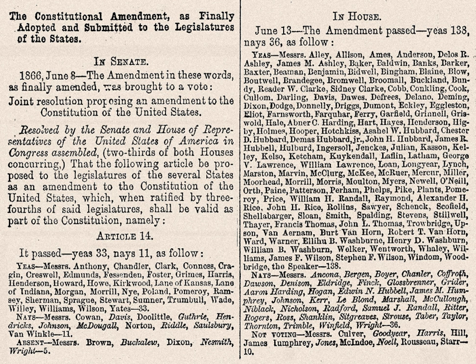Consideration then turned to a proposed amendment by Representative John A. Bingham of Ohio, which would enable Congress to safeguard 'equal protection of life, liberty, and property' of all citizens; this proposal failed to pass the House. In April 1866, the Joint Committee forwarded a third proposal to Congress, a carefully negotiated compromise that combined elements of the first and second proposals, as well as addressing the issues of Confederate debt and voting by ex-Confederates. The House of Representatives passed House Resolution 127, 39th Congress, several weeks later and sent it to the Senate. Amendments to Sections 2, 3, and 4 were adopted on June 8, 1866, and the modified resolution passed by a 33 to 11 vote. The House agreed to the Senate amendments on June 13 by a 138 to 36 vote.